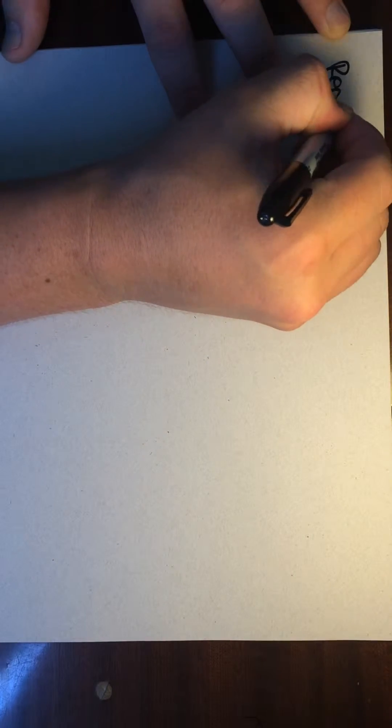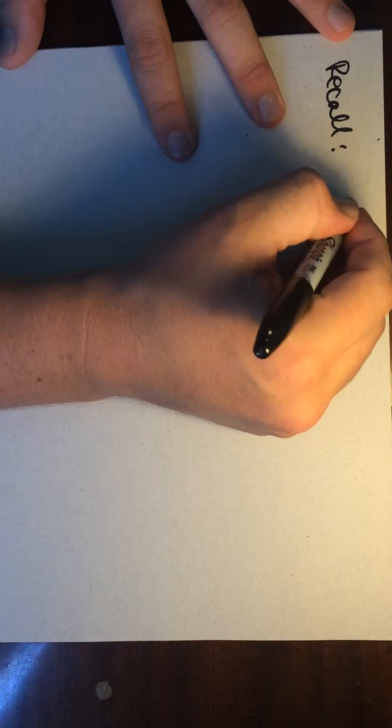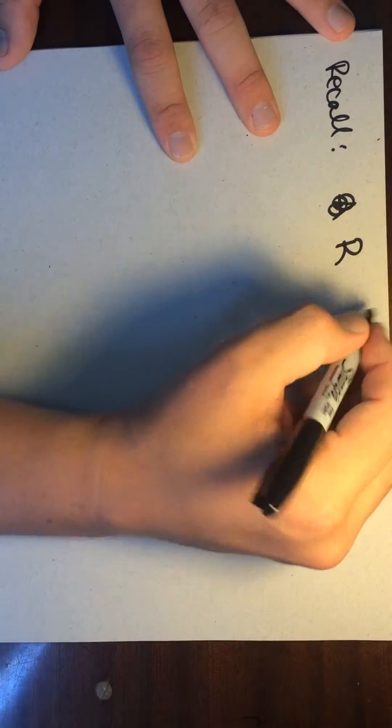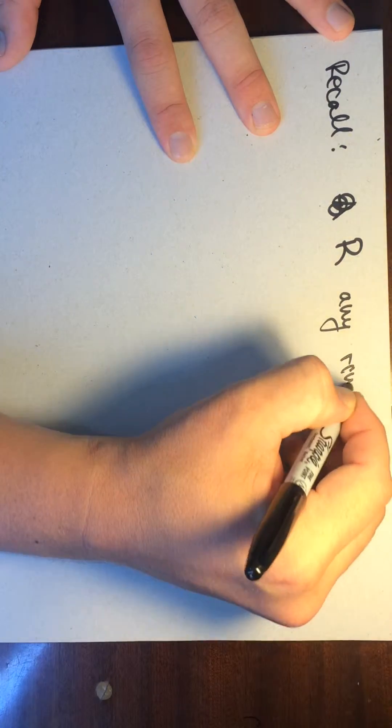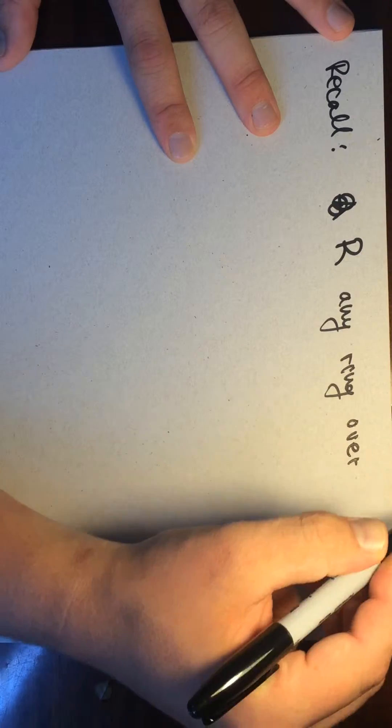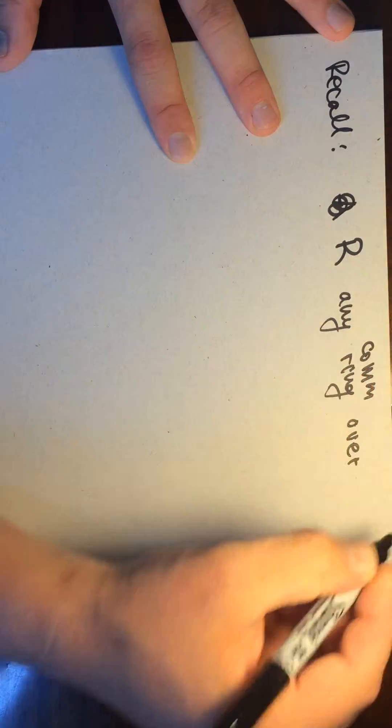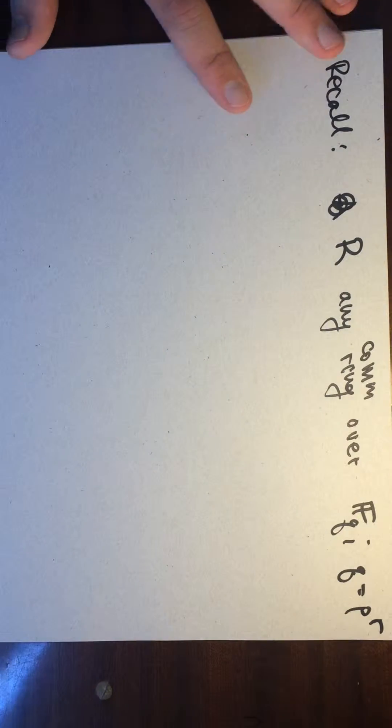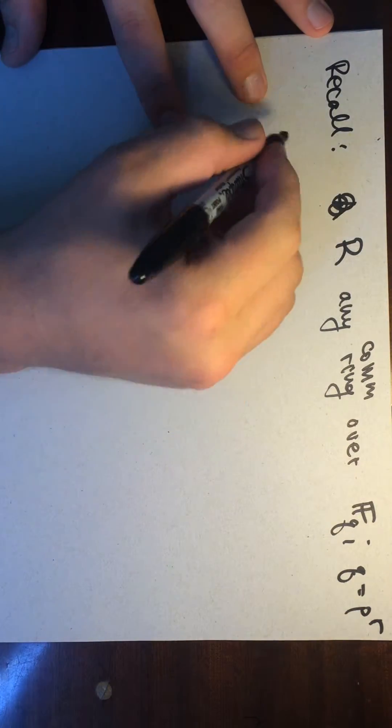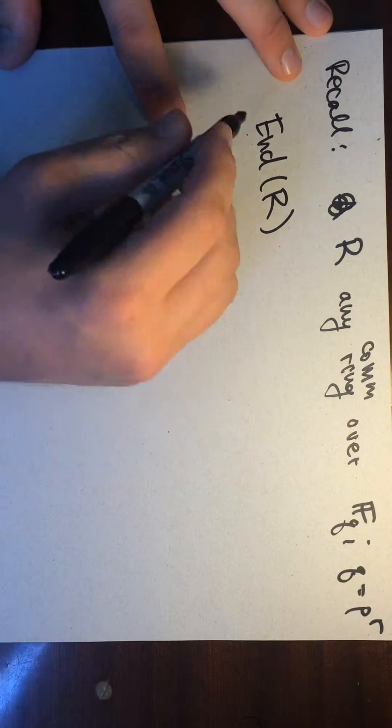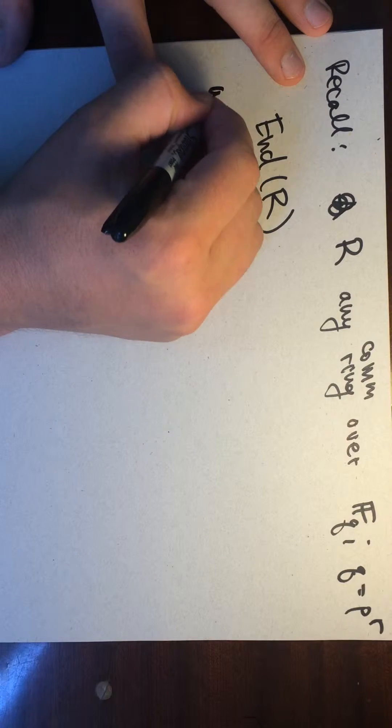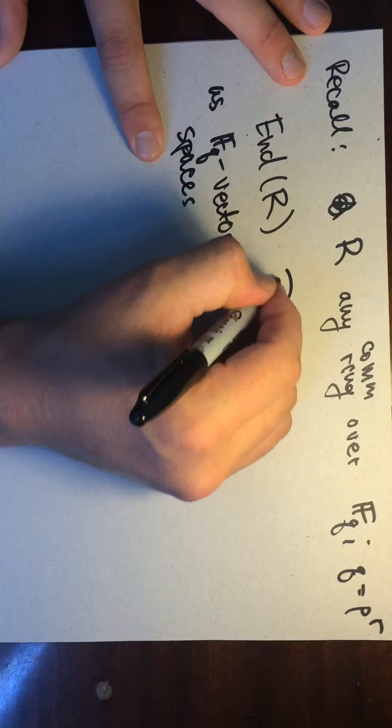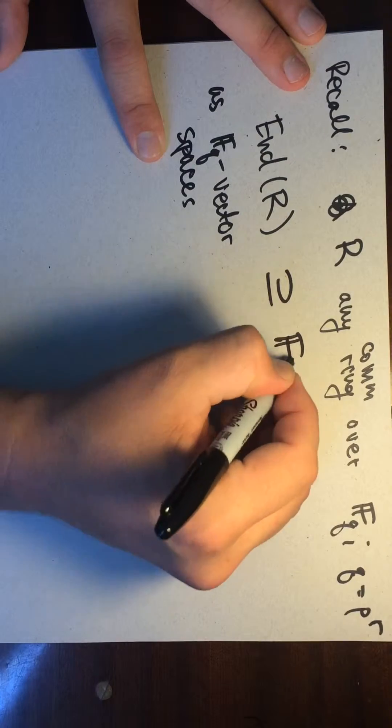So let's recall that if R is a ring, any ring, so it's a commutative ring over, let's say commutative F_Q. So this Q is going to be equal to P to the R for some R. Then what we can do is we can look at the endomorphisms of R. Okay, so this could be as abelian groups or as, let's say, F_Q vector spaces. And this thing will contain these additive polynomials.